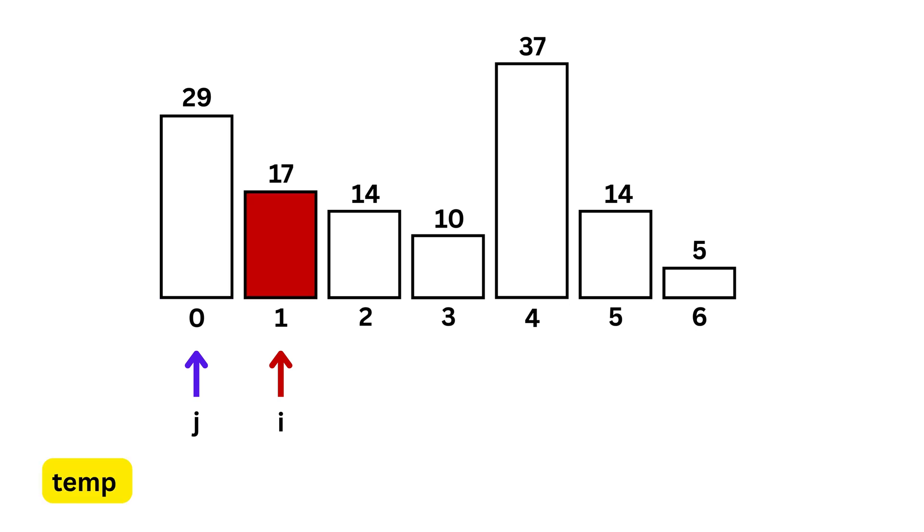Then, temp is the variable that holds the value of the current number we picked using i. We save it because we might shift some bigger numbers to the right, and we don't want to lose the number we are inserting.